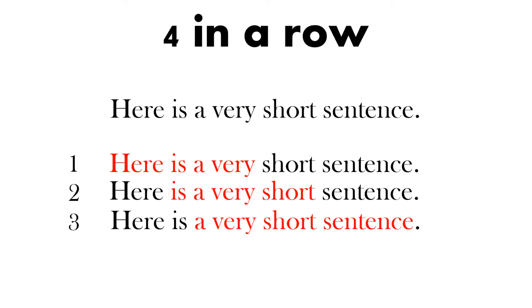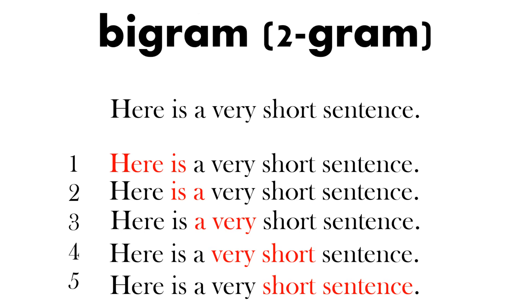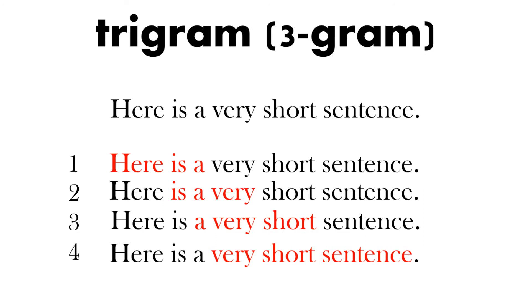Similarly, for fourgrams — four words in a row — the sentence 'Here is a very short sentence' gives us: 'here is a very', 'is a very short', 'a very short sentence'. So there are three fourgrams. Going back to bigrams — two in a row — we get: 'here is', 'is a', 'a very', 'very short', 'short sentence'. So that's five bigrams.